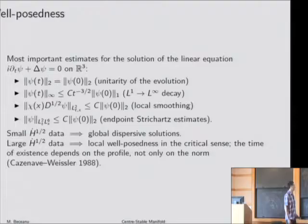For large initial data, one has local well-posedness, which means that the solution exists for some time, which depends on the profile, and not only on the norm of the initial data. This is considering the critical norm.